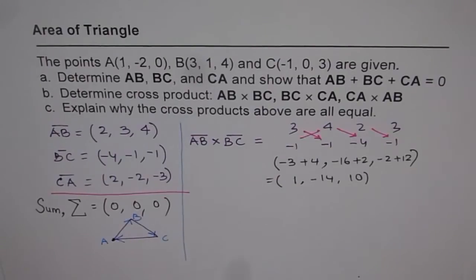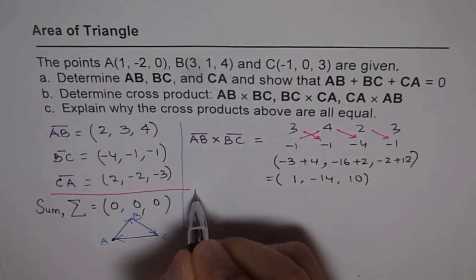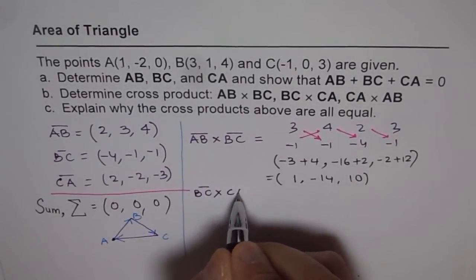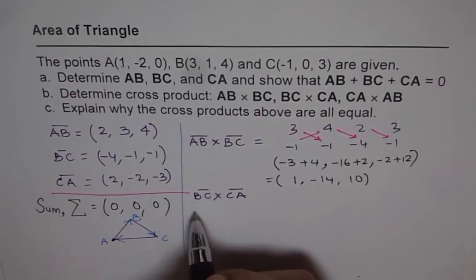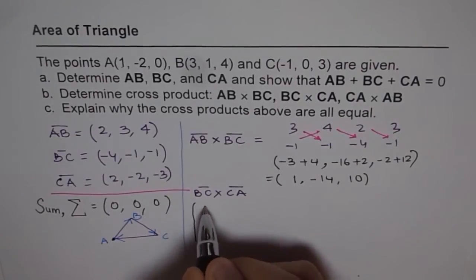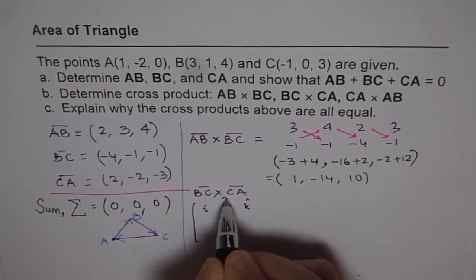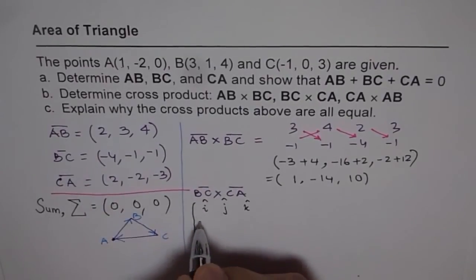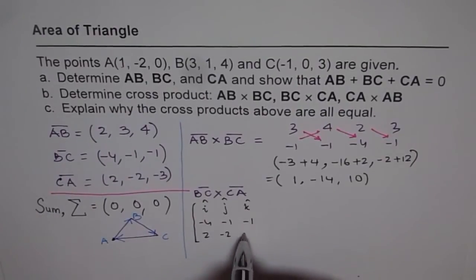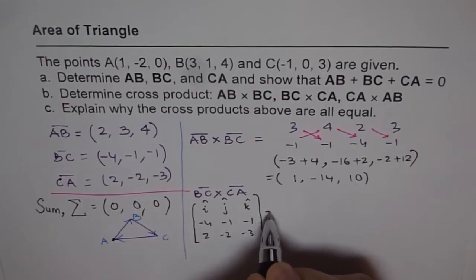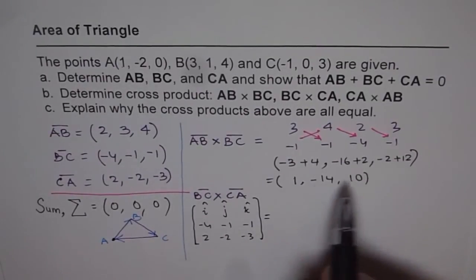Now let's do BC × CA using the matrix method. We draw a matrix with unit vectors I, J, K in the first row, BC = (-4, -1, -1) in the second row, and CA = (2, -2, -3) in the third row. For the I component, we consider the submatrix excluding the first row and column.